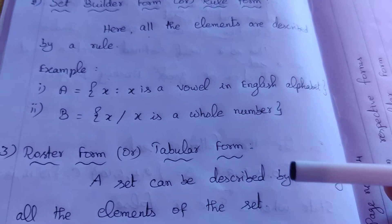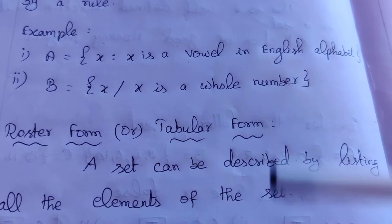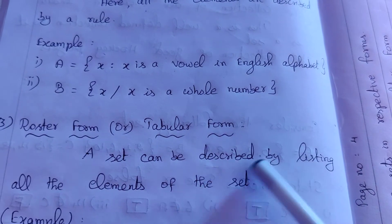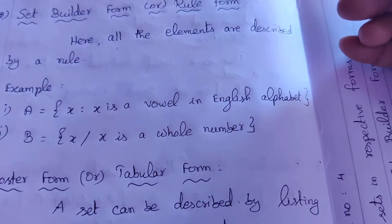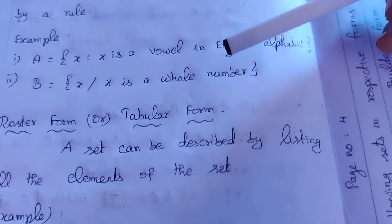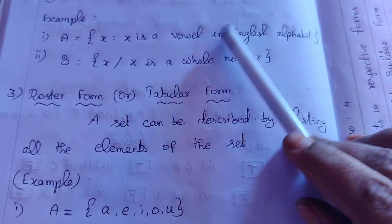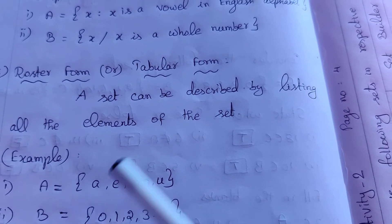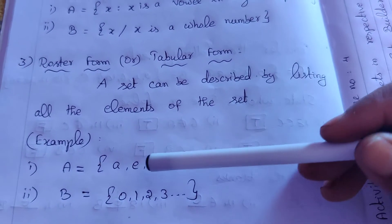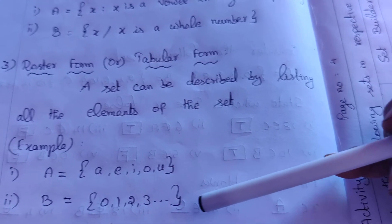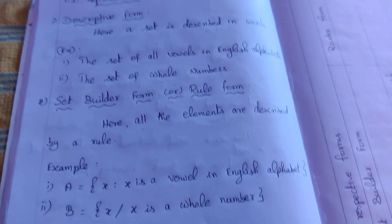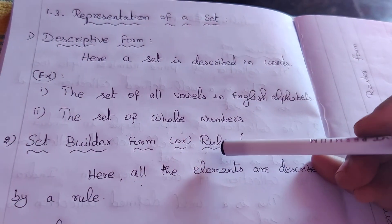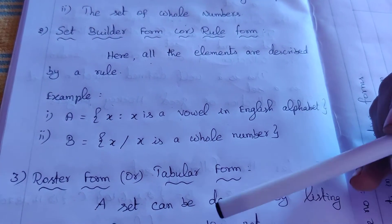The third form is the Roster form. In the roster form, the answer is a list — we list out all the elements of the set. To summarize: Descriptive form uses words, Set Builder form is rule-based, and Roster form lists out the elements.